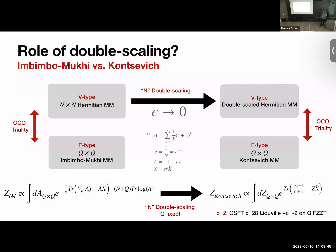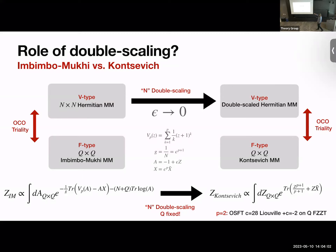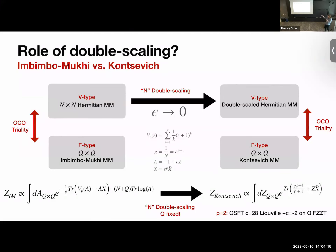For the more mathematically inclined: let me put the manipulations in perspective. The role of the Itzykson-Zuber matrix model — when people studied double-scaled matrix integrals such as the double-scaled Gaussian, they came up with the Witten conjecture saying correlators are observables in 2D topological gravity. Kontsevich proved that conjecture using a totally different matrix model. For a long time the relationship between the two was unclear. Work by Seiberg, Maldacena, Moore, and Shenker first did these types of manipulations for the Gaussian case, then took the double scaling limit and showed the double-scaled Gaussian ends up being the cubic Kontsevich model — the p=2 case.